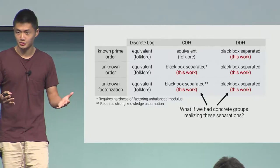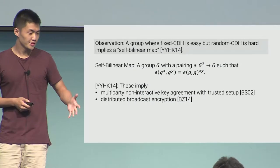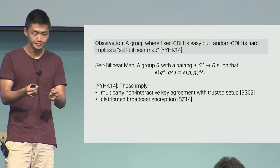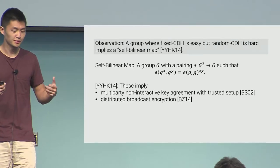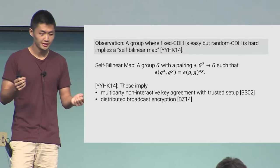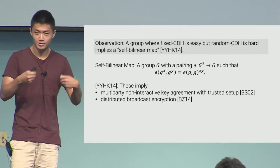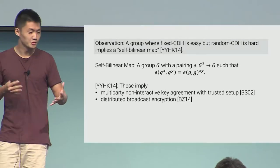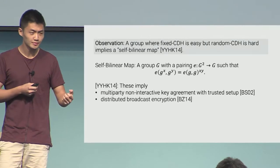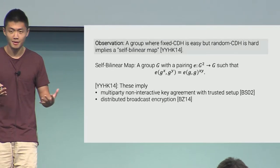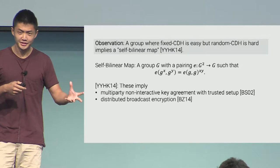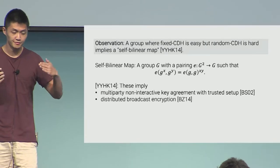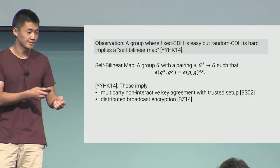For the CDH separations, we need to make further computational assumptions for the black box separation to go through, but for DDH our separations are unconditional. This raises the question: we have these black box separations, and it might be possible that you actually have concrete groups that realize these separations. As an observation — I'm calling it an observation because it's not terribly hard to figure out — if you have a group where fixed generator CDH is easy but random generator CDH is hard, it turns out this implies something called a self-bilinear map. This is a group equipped with a pairing E where the source groups and the target groups are all the same group. Self-bilinear maps are an incredibly powerful cryptographic object, known to imply multi-party non-interactive key agreement, which is only known from multi-linear maps or from obfuscation.